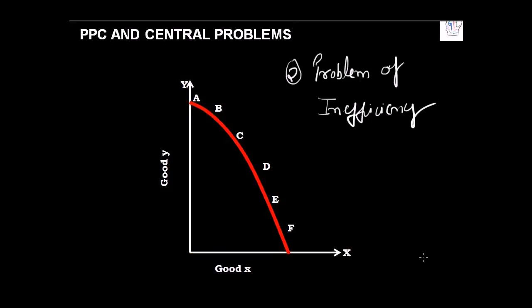The second problem that PPC solves is the problem of inefficiency. Any point on the PPC curve represents full employment or full efficiency. If there is a point on the PPC like D, B, or E, each of these points will show full efficiency because at any of these points, whatever combination you make, you would be efficiently utilizing your resources.